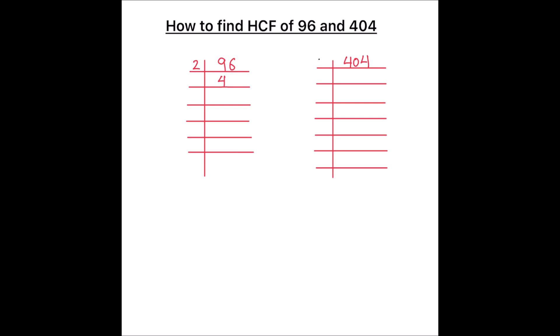2 times 4 is 8, remainder 1, this becomes 16, 2 times 8 is 16. Again we can use 2 to divide 48: 2 times 2 is 4, 2 times 4 is 8. 2 times 1 is 2, 2 times 2 is 4, 2 times 6 is 12, 2 times 3 is 6. And 3 is a prime number, it is only divisible by 3: 3 times 1 is 3. So the number is fully divided and we got the factors of 96 on the left hand side of the ladder.